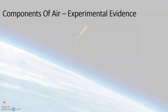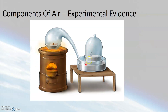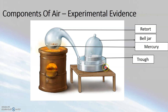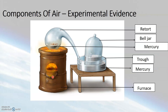Now let us look at Antoine Lavoisier's experimental study, which helps us understand the components of air. As you see in the picture, the experimental setup included a curved neck retort containing mercury, a bell jar that had trapped air inside, a trough containing mercury, and a furnace. Mercury was heated in this curved neck retort for several days, about 12 days. On heating, small red colored balls were observed forming on the heated surface of mercury.